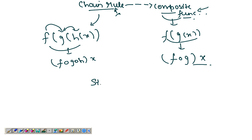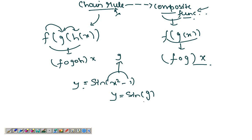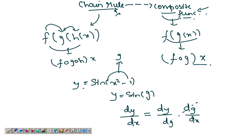For example, if I have sine of (x² - 1), this is a function of a function. Let's call the inner part g, so g = x² - 1, and then y = sin(g). We have to find dy/dx. I can write this as dy/dg times dg/dx, because the dg terms cancel out and you get dy/dx back.